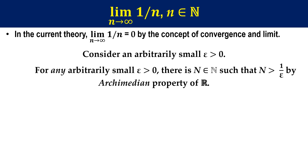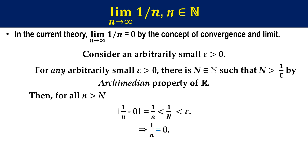The proof is as follows. Consider an arbitrary small epsilon larger than zero. For any arbitrary small epsilon larger than zero, there is capital N such that capital N is larger than 1 over epsilon by the Archimedean property of real numbers. Archimedean property is one expression that real numbers are infinite; you may look it up in the textbook. Then, for all n larger than capital N, absolute value of 1 over n minus zero, which is 1 over n, is smaller than 1 over capital N, which is smaller than epsilon.